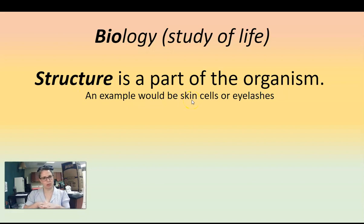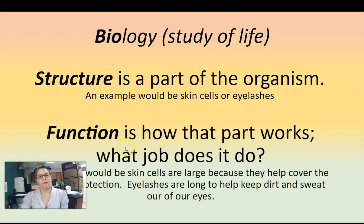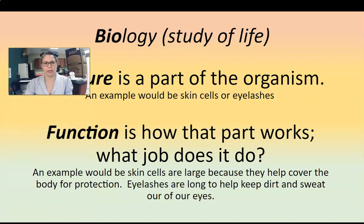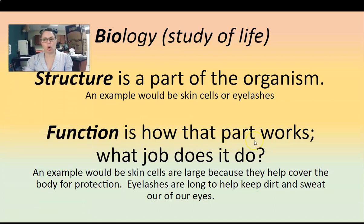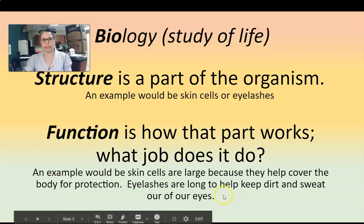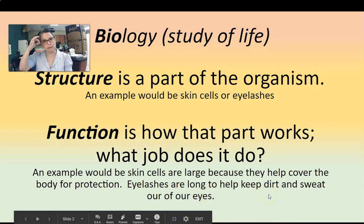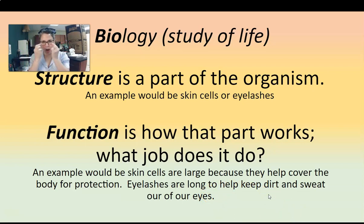An example would be skin cells — we're covered in skin cells — and eyelashes. Function, on the other hand, is how does that part work? Each structure has a job to do. Your skin cells are large; their shape is very large because they have to cover a lot of surface area to protect our bodies. Our eyelashes are long and feathery and very close together right on our eyelids to help prevent things from getting into our eyes — they're there to protect our eyes.